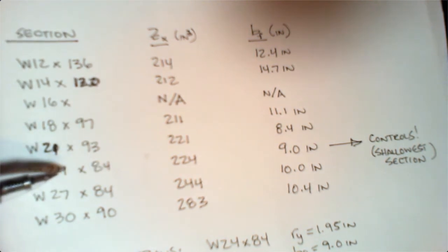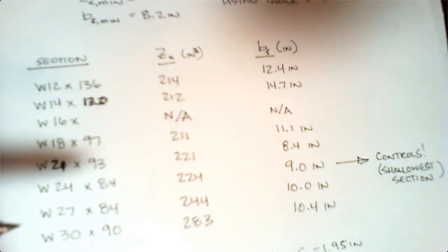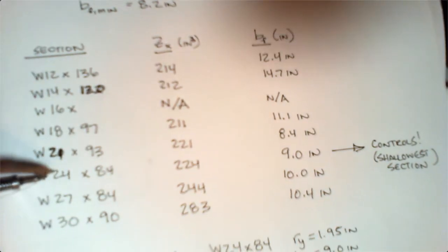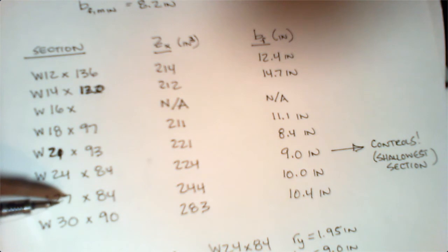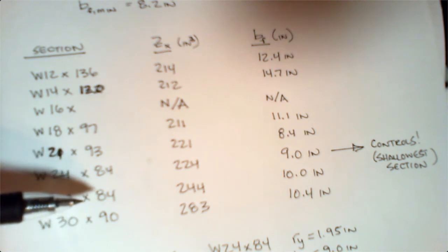I've got an 18 by 97, a 21 by 93, a 24 by 84—that was the one I pointed to on that table we showed you just a second ago. You can see all the Zx values meet the limits, and all of my bf values also meet the limits.